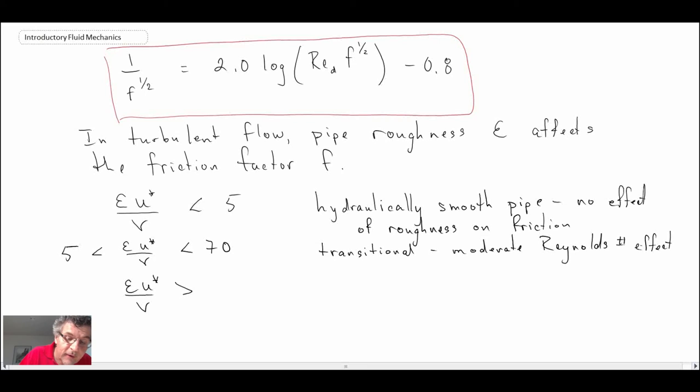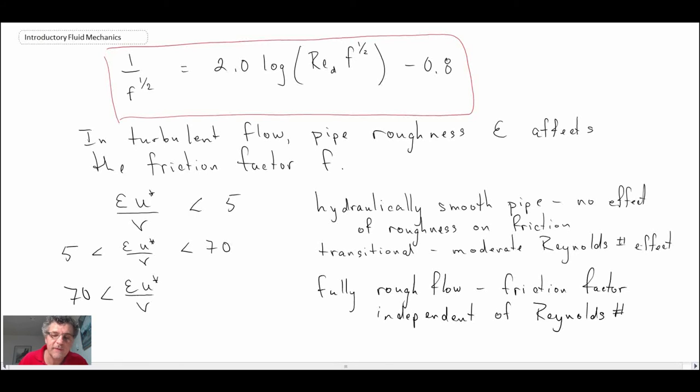What's happening here is as you increase Reynolds number it will have a moderate impact on our friction factor F. And then finally if this number, which is basically a Reynolds number for our roughness, if it is greater than 70 then we have what we refer to as being fully rough flow.